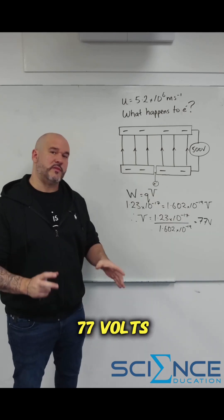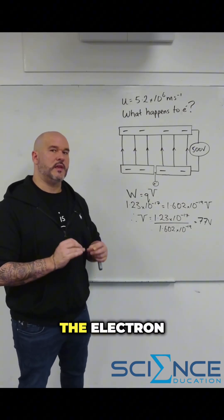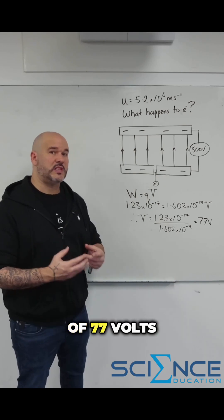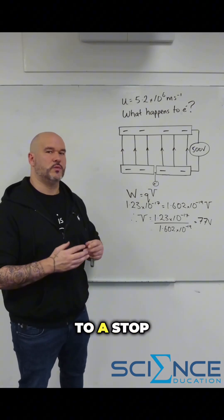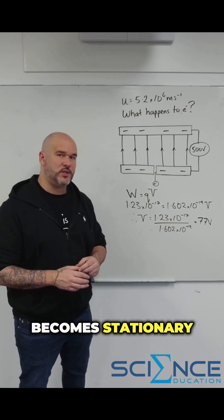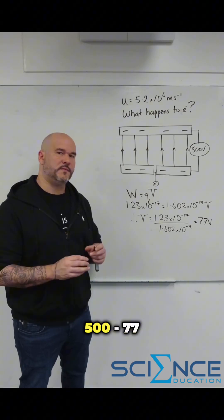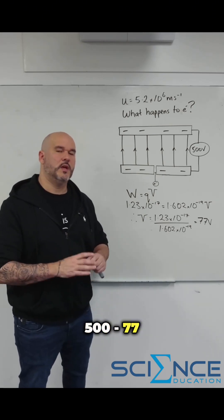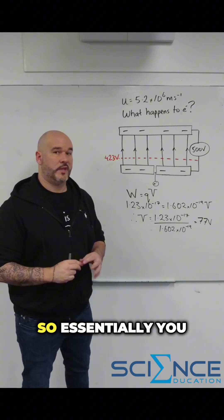So we end up with a voltage of 77 volts. This tells us the electron has to go through a potential difference of 77 volts before it comes to a stop. So therefore, it becomes stationary when it's at a potential of 500 minus 77, which is 423 volts.